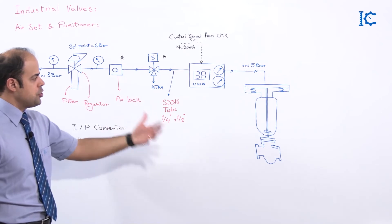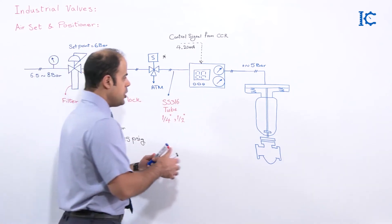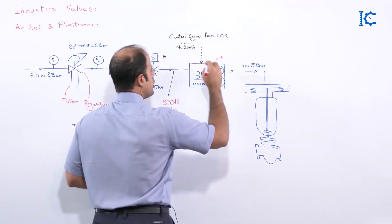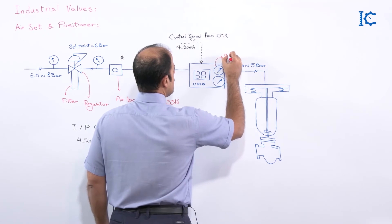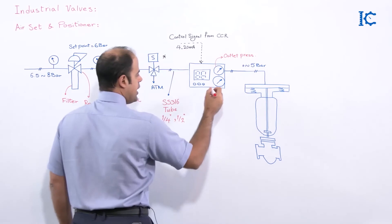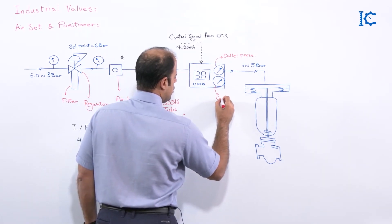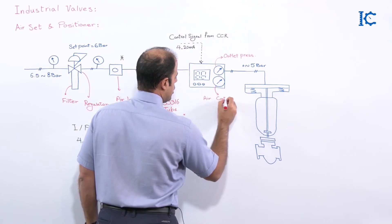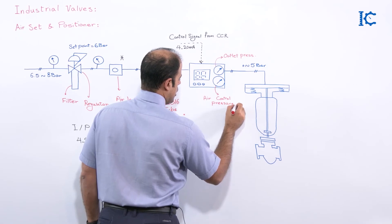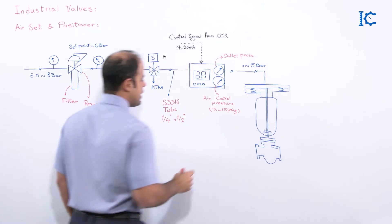So this is the format, or how can I say, the procedure of the working of the positioner here too. One pressure gauge here. One pressure gauge shows the outlet pressure and another one shows the control or air control pressure, I mean 3-15 psig. That's it.